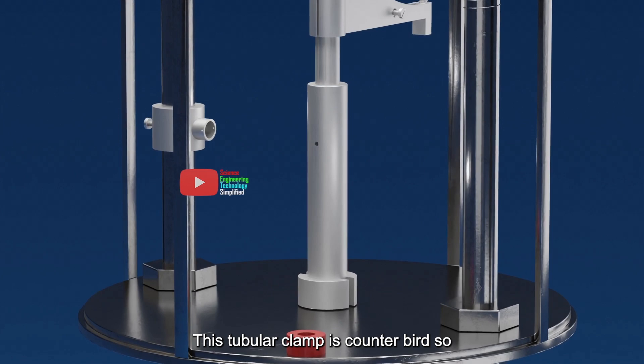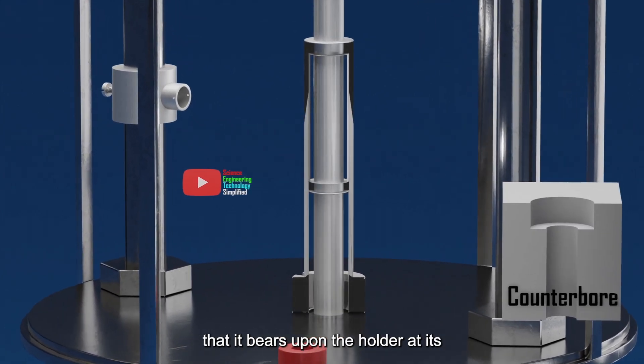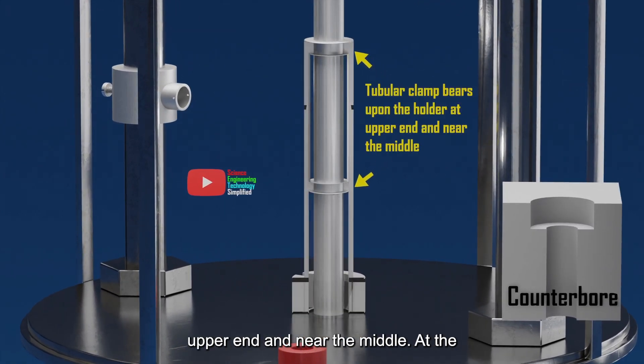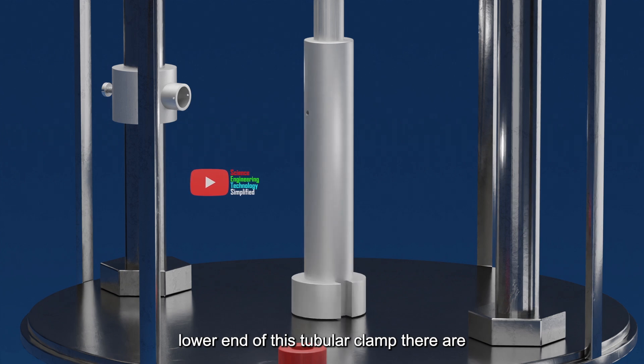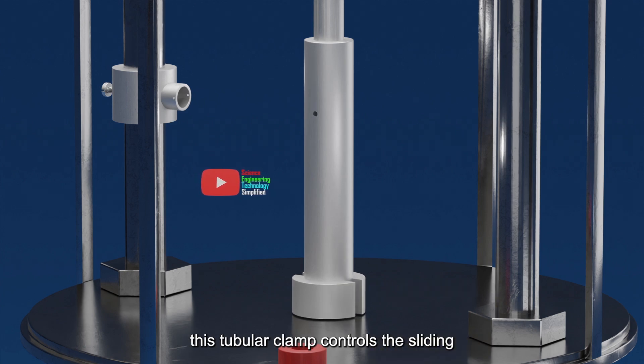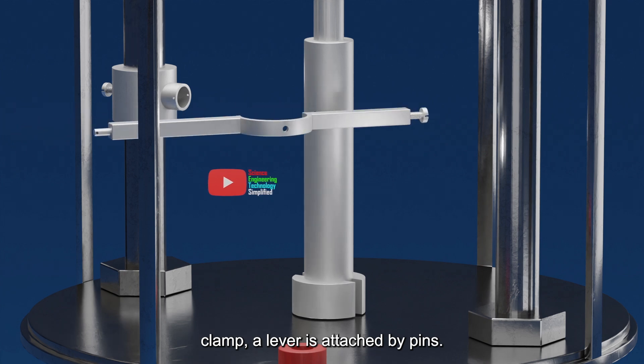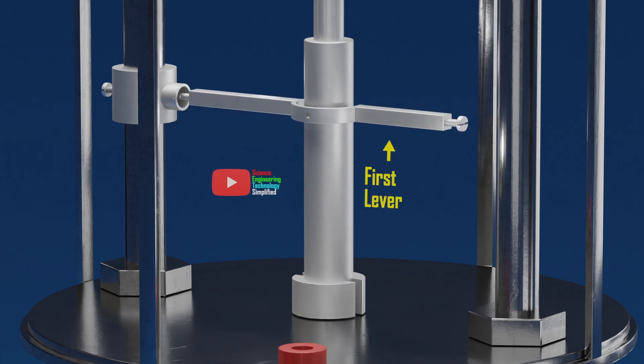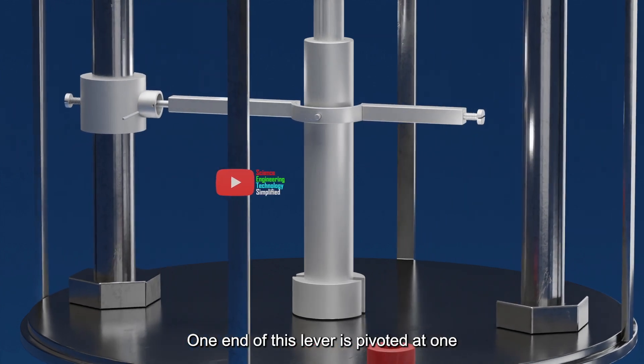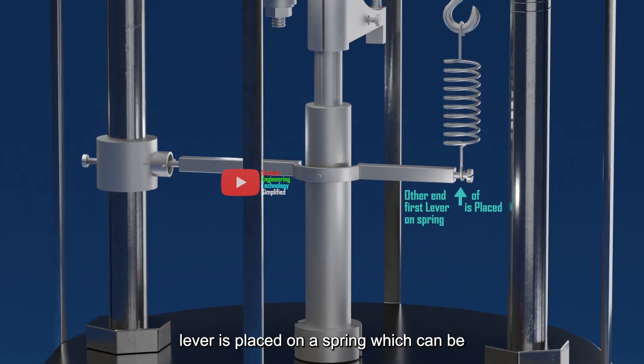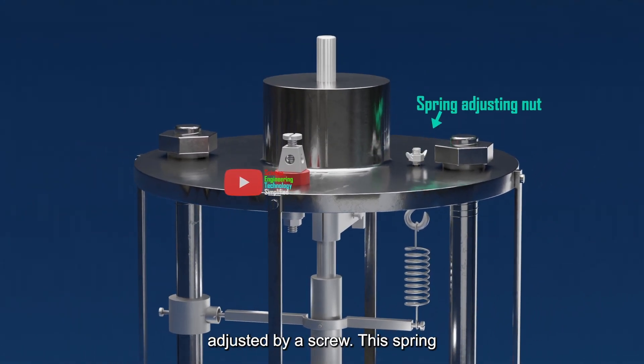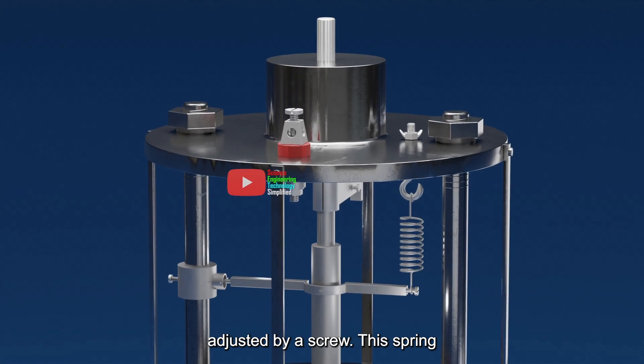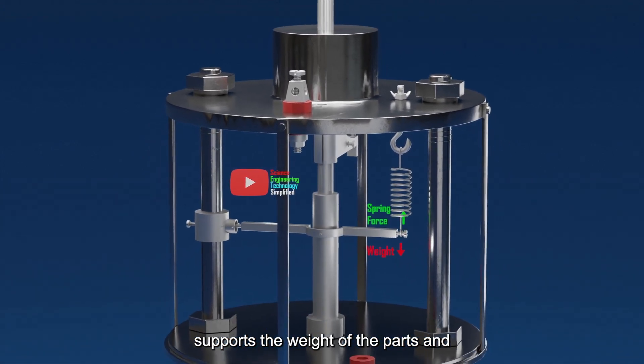Another thing to control the sliding of this holder is a tubular clamp. This tubular clamp is counter-bored so that it bears upon the holder at its upper end and near the middle. At the lower end of this tubular clamp, there are armature segments of soft iron. After a couple of minutes, we will see how this tubular clamp controls the sliding of the rod. Now to this tubular clamp, a lever is attached by pins. One end of this lever is pivoted at one of the columns, and the other end of this lever is placed on a spring, which can be adjusted by a screw. This spring supports the weight of the parts and balances the same.